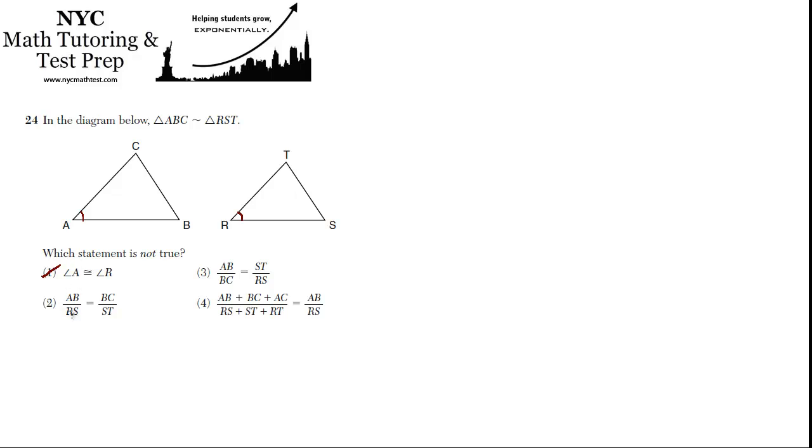Then AB is to RS. AB, the bottom of this triangle, is to RS, the bottom of this triangle, as BC is to ST. BC is the right side of this, ST is the right side of that. So yeah, that should be true.